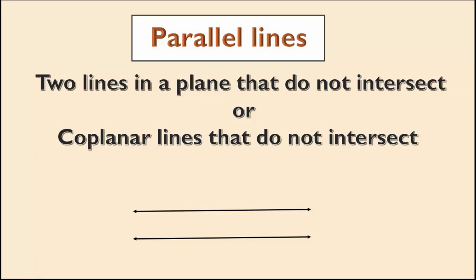Two coplanar lines are said to be parallel if they do not intersect.